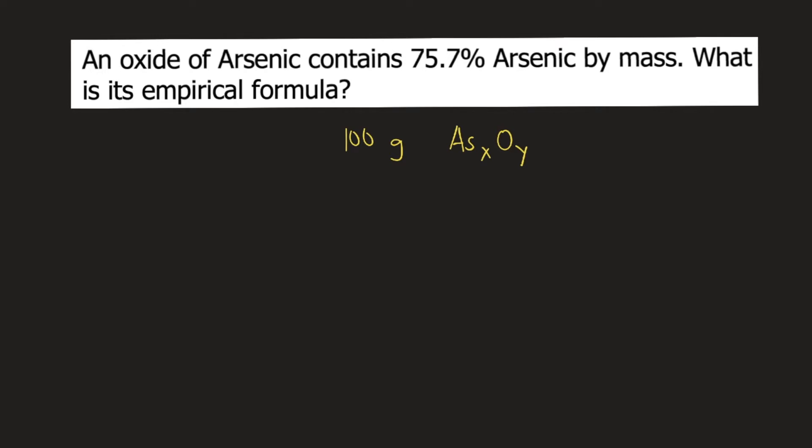So if you have 100 grams of the compound, that means you have 75.7 grams of arsenic, because the problem says the compound contains 75.7% arsenic by mass. And the remainder would be oxygen. So the remainder would be 100 grams minus 75.7 grams, that is equal to 24.3 grams of oxygen.